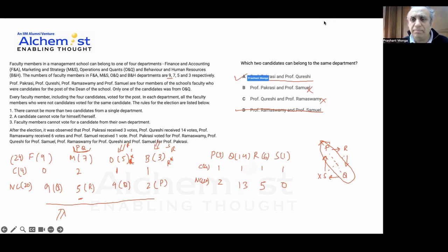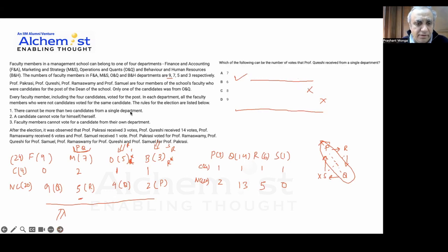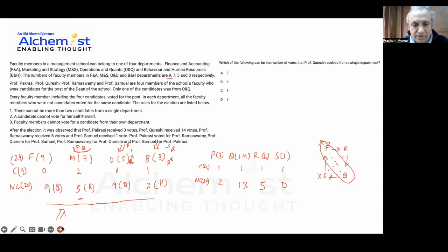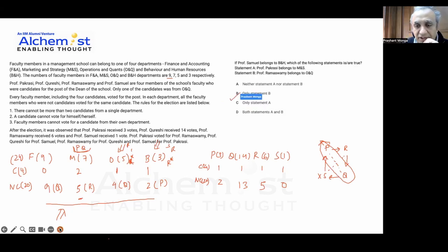So the answer is that Professor Prakashi and Kurishi are from the same department. Now for the next question: which of the following can be the number of votes Kurishi got from a single department? Since Kurishi got nine plus four votes, the answer is nine votes from a single department.